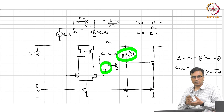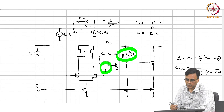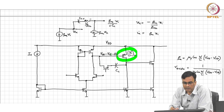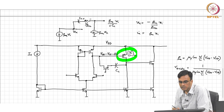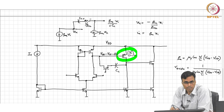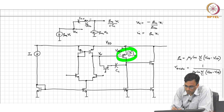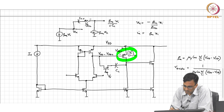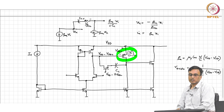As per our discussion, the source-gate voltage of both the transistors must be the same. But the source of this transistor is at V_DD minus V_TP minus delta_V. So what should the gate potential be? The source voltage is at V_DD minus V_SG2, so this voltage should be V_DD minus twice V_SG2. And how will you realize V_DD minus twice V_SG2?